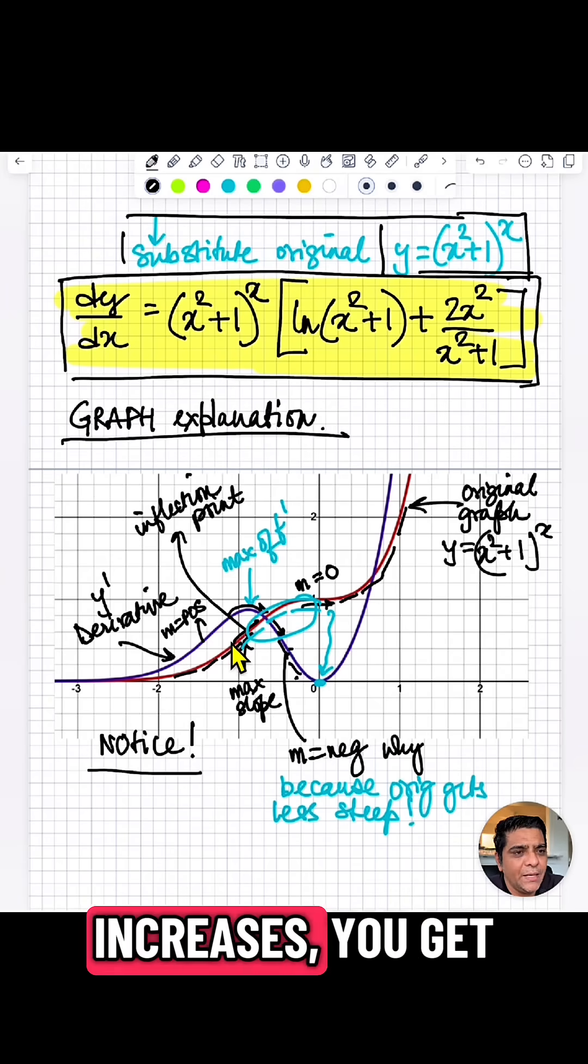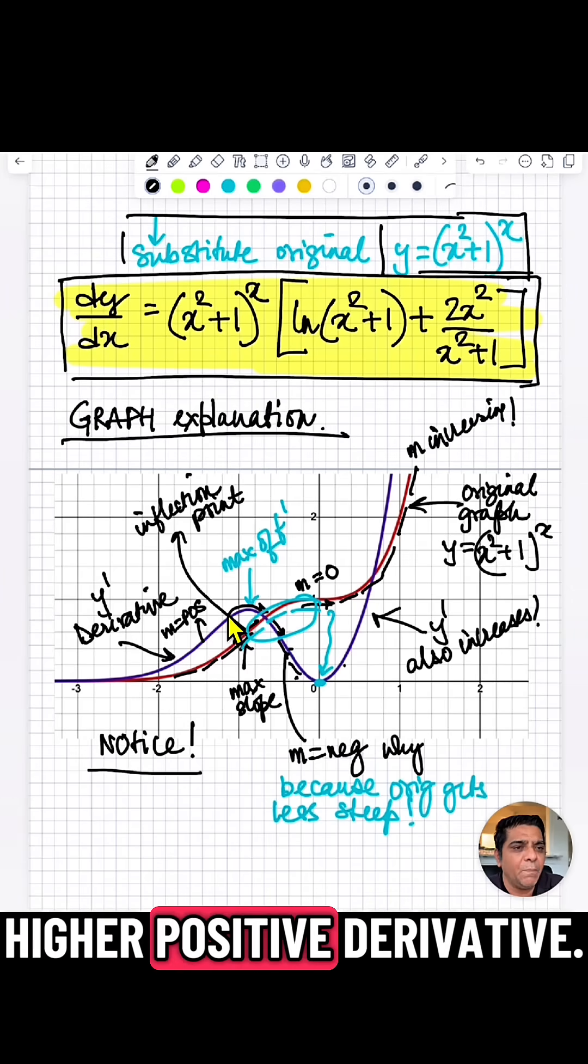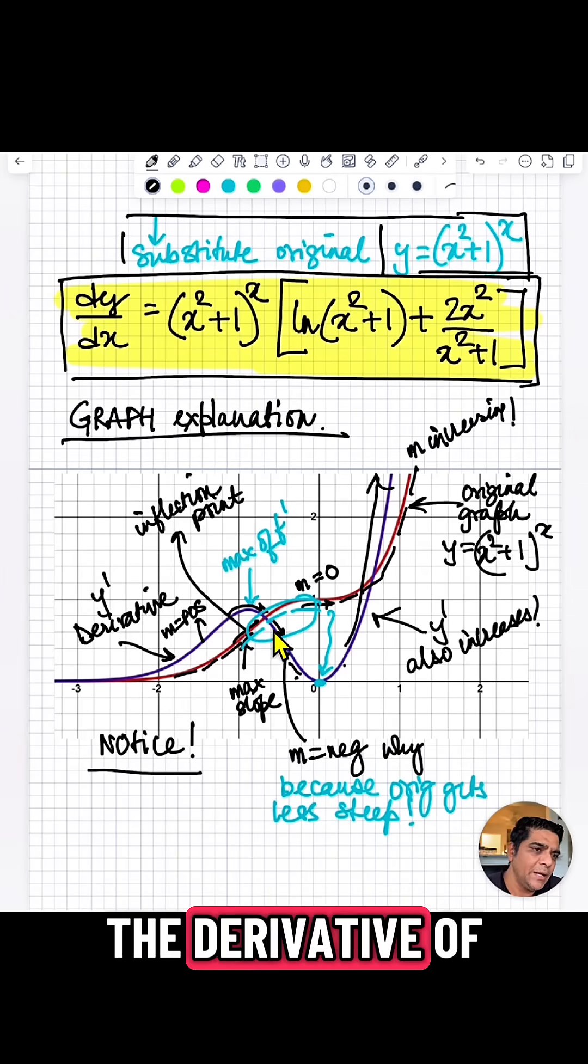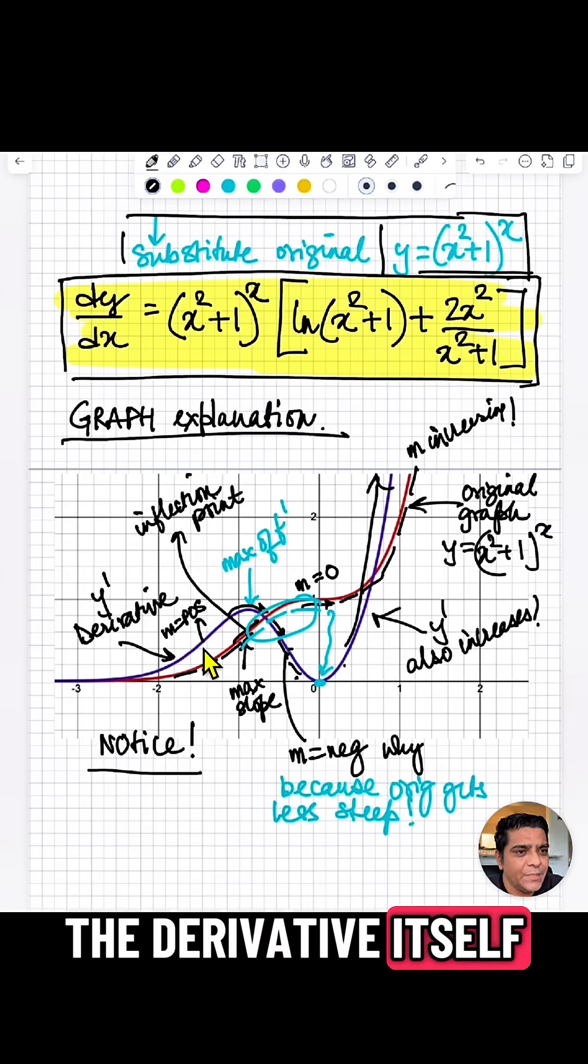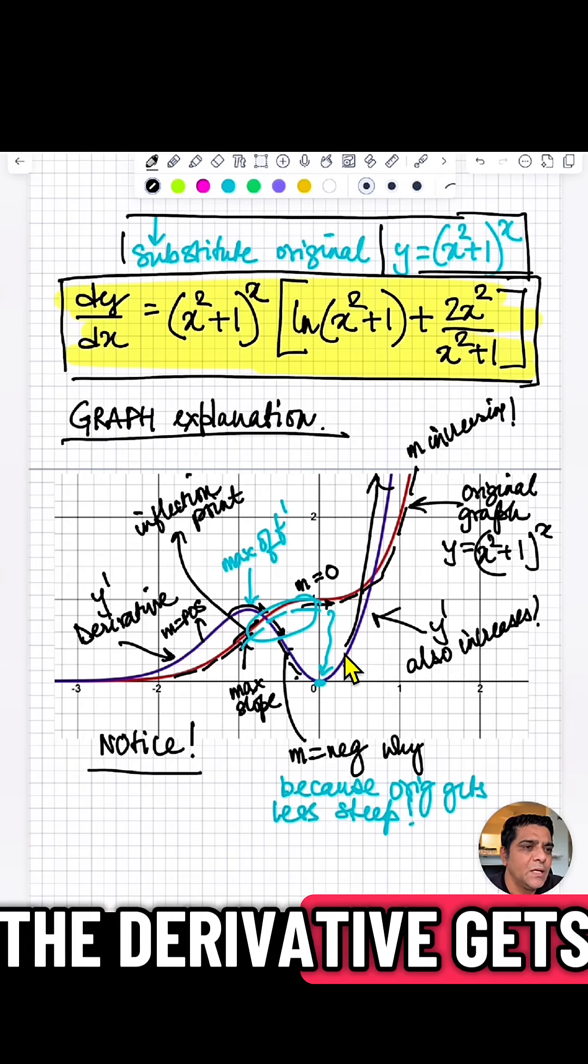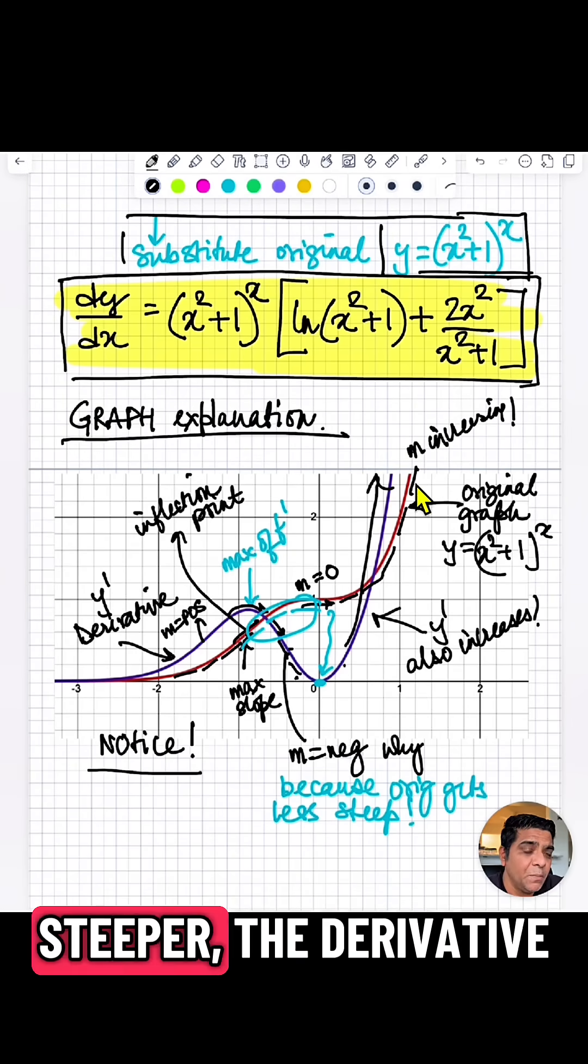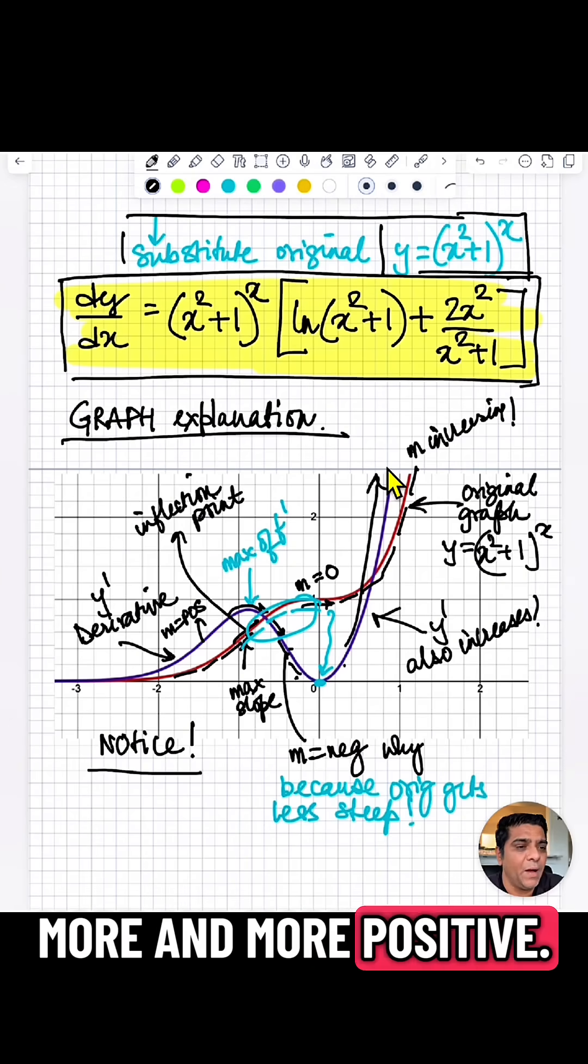So as the slope increases, you get more and more and more higher positive derivative. As the slope gets less steep, the slope of the derivative gets negative. The derivative itself is positive. And then here also, as the original function gets steeper, steeper, steeper, the derivative increases more and more and more positive.